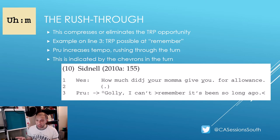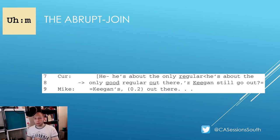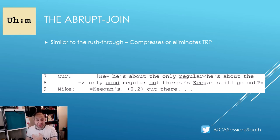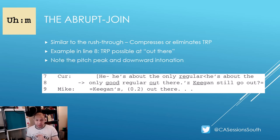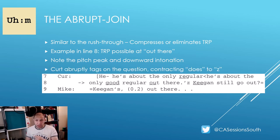Another practice involves the timing of the next turn in a way that eliminates the normative transition space at the end of a turn. In this example, there was a possible completion point at 'out there' on line eight, projected by the pitch peak and downward intonation. Kurt then abruptly tags on the question while contracting 'does' to 'z,' as in 'z Kegan still go out.'